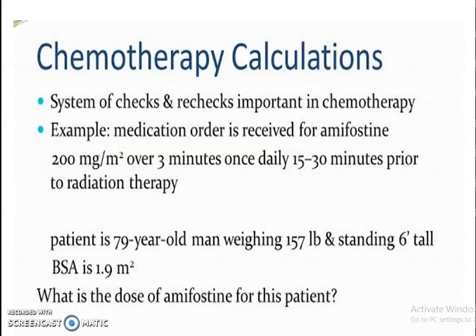Then calculation of chemotherapy. There must be a system of checks and rechecks, which is very important in chemotherapy. For example, when a medication order is received for amifostine 200 mg per meter square over 3 minutes once daily for 15 to 30 minutes prior to radiation therapy, and the patient is a 79-year-old man weighing 157 pounds with a height of 6 feet tall, the body surface area of the patient will be 1.9 meter square. So what is the dose of amifostine for this patient?